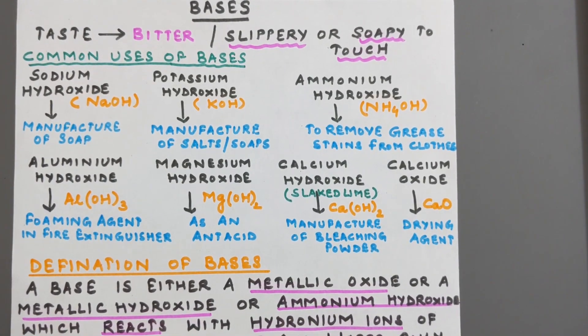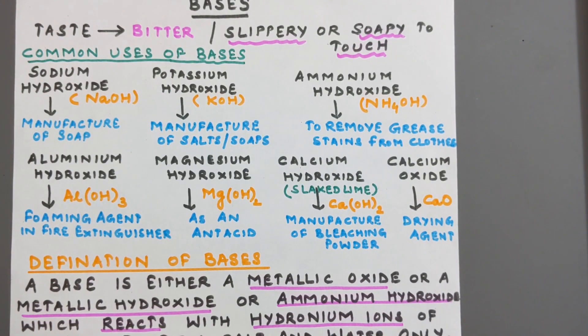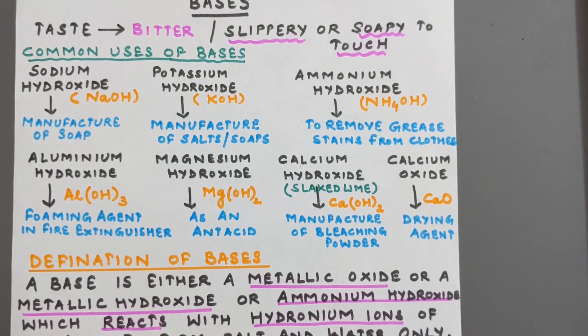Some common uses of bases are sodium hydroxide NaOH, it is used in the manufacturing of soaps. Potassium hydroxide KOH is used in the manufacturing of soaps and salts.